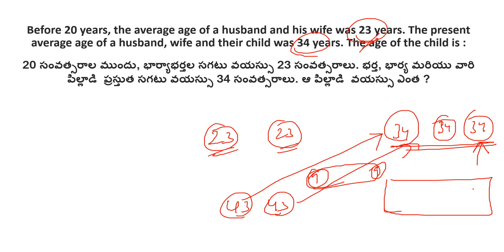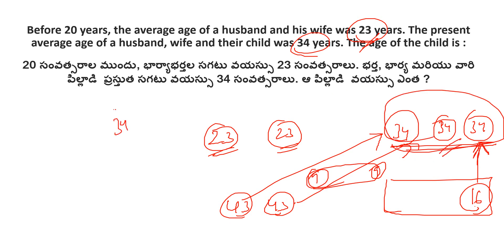43 minus 34 is 9. So the child's age is 9 years. You can review a dedicated video on averages for this concept, which has been explained very clearly.